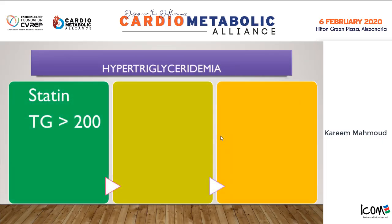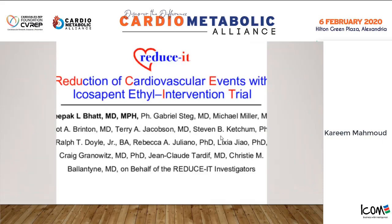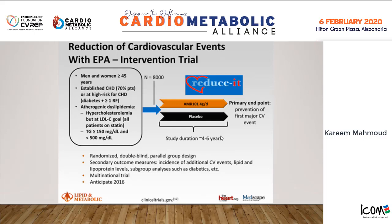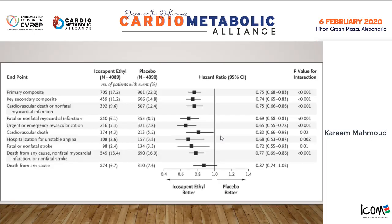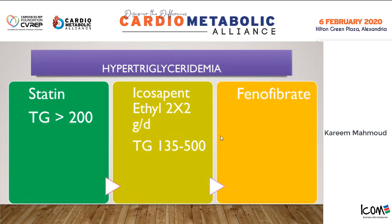Regarding triglycerides, the first-line management is still statin, given when triglycerides exceed 200 mg/dL. If the patient is not achieving the target and still has triglycerides between 135 and 500 mg/dL, we should add icosapent ethyl at a high dose of 4 g per day, based on the REDUCE-IT trial. The REDUCE-IT trial showed that in patients with established cardiovascular disease or high cardiovascular risk, adding this drug produced very favorable cardiovascular outcomes, reducing both primary and secondary cardiovascular events. Fenofibrate has a Class IIb recommendation and should be reserved for very high triglycerides; icosapent ethyl should be the first line.